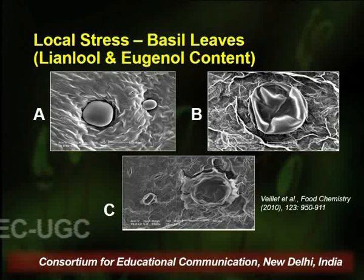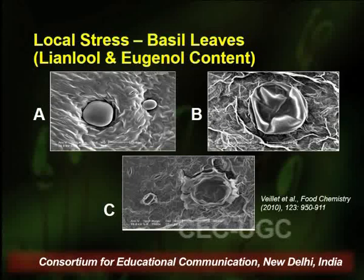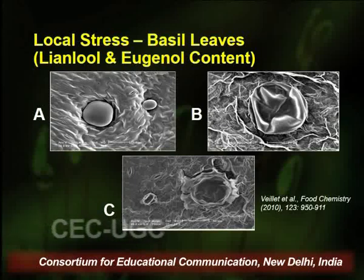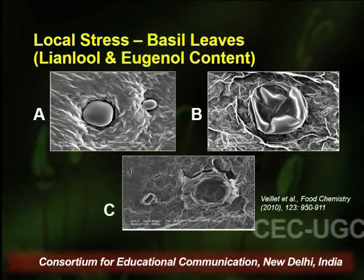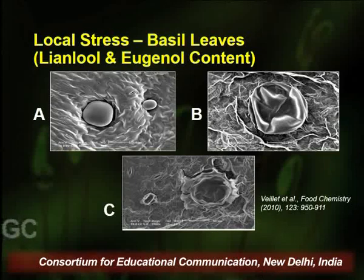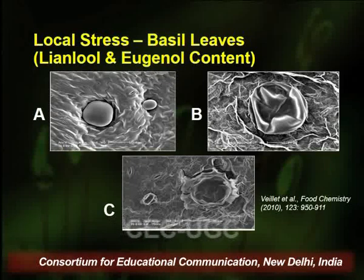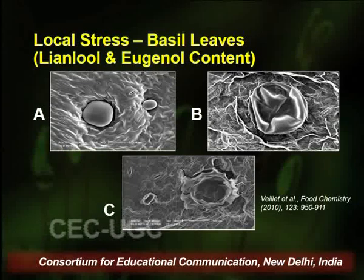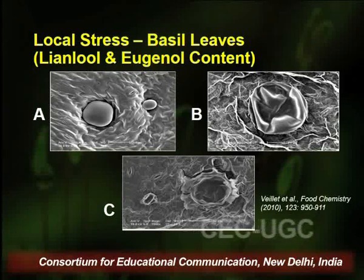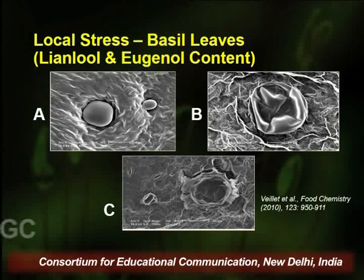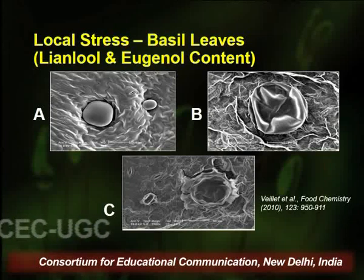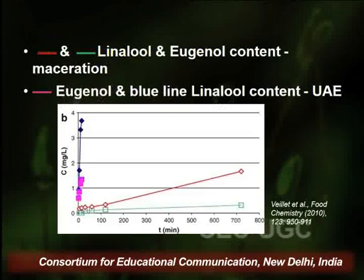Another effect produced by the impact of micro jets on plant cells is local stress. This was studied on basal leaves extracted with ultrasound-assisted extraction. The first image shows the intact leaf surface with round glandular trichomes. The second image shows slight distortion after maceration. The third image, after ultrasound extraction, shows complete disruption of the glandular trichomes, increasing the overall yield of linalool and eugenol content.